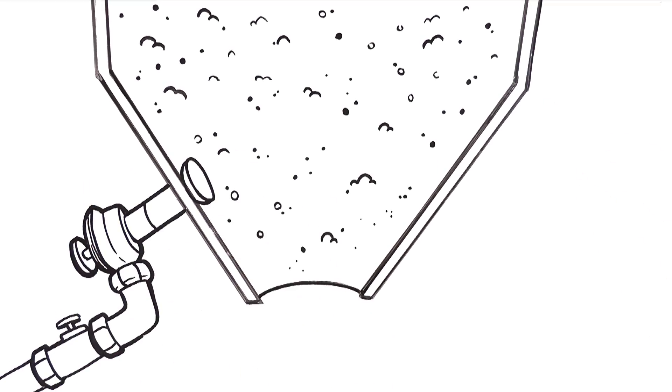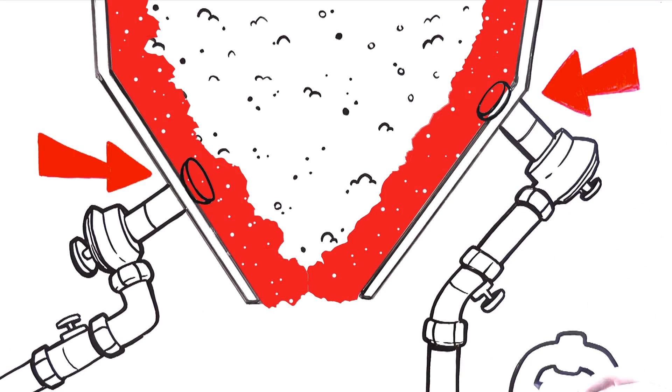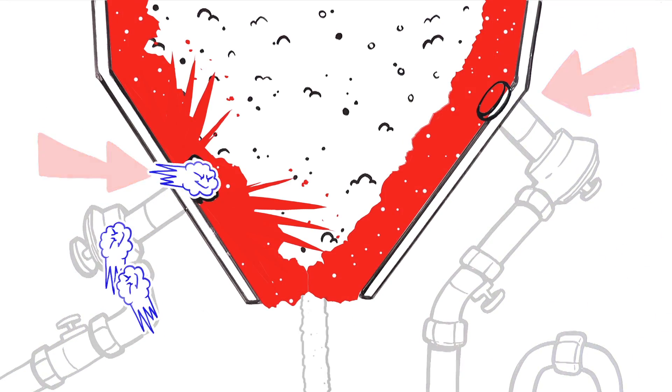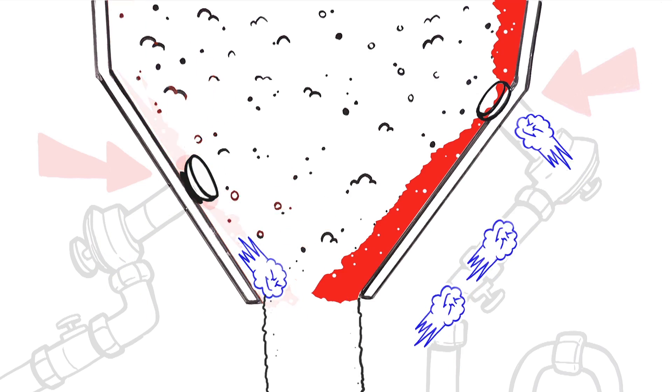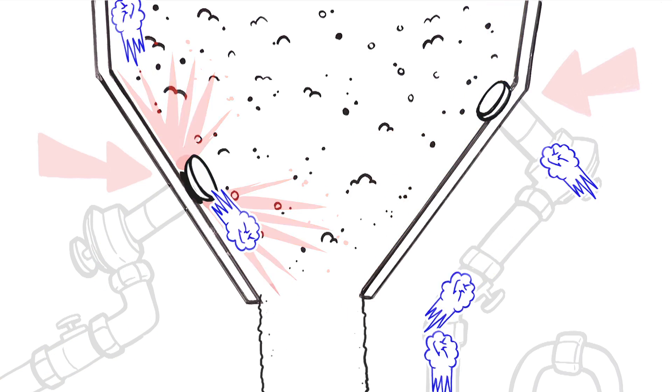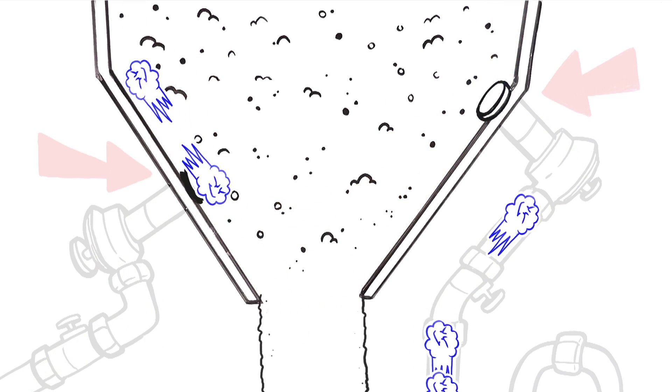Usually AirSweep nozzles are installed around the lower walls and bottom of the vessel to be flushed. The nozzles are pulsed in sequence to activate and lift sections of material off the walls and sweep it out of every nook and cranny.